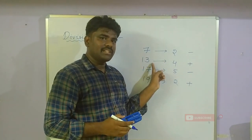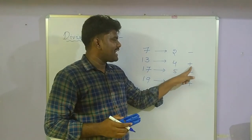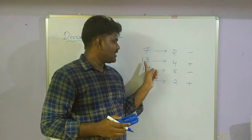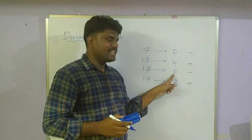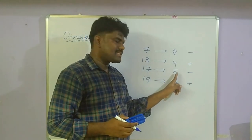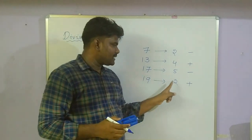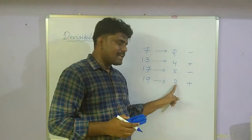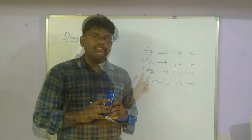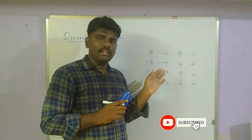For 13, the units place is multiplied by 4 and added to the remaining digits. For 17, the units place is multiplied by 5 and subtracted from the remaining digits. For 19, the units place is multiplied by 2 and added to the remaining digits. So the multipliers are 2, 4, 5, 2 and the operations alternate minus, plus, minus, plus.